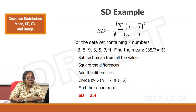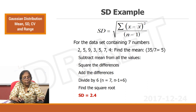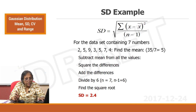For example, with data points 2, 5, 9, 3, 5, 7, 4 — the standard deviation using this formula is 2.4. We will demonstrate that in the computer video as well.